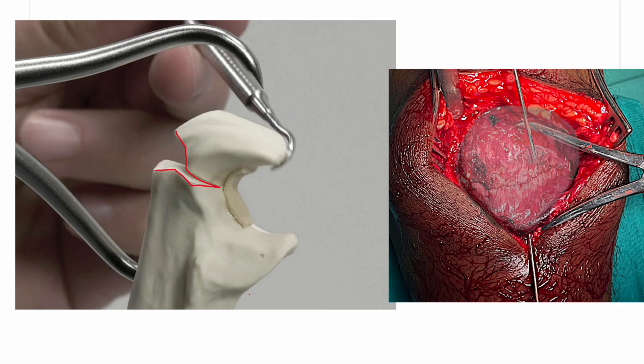The prerequisite is anatomical reduction. First, the patella should be perfectly reduced with the fracture line barely visible. Hook clamps can be used to fine-tune the reduction and obtain a good result.